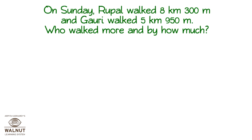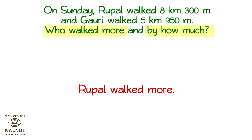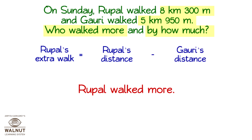On Sunday, Rupal walked 8 kilometres 300 metres and Gauri walked 5 kilometres 950 metres. Who walked more and by how much? What do we have to find out? Two things: who walked more and by how much? The first part is easy — looking at the distances, we know that Rupal walked more. We have to find out by how much. So, how much Rupal walked more is equal to what Rupal walked minus what Gauri walked.